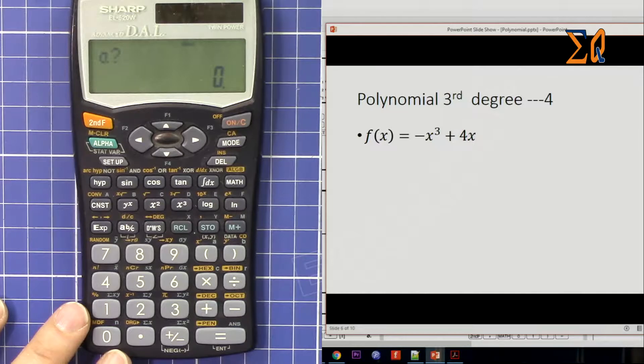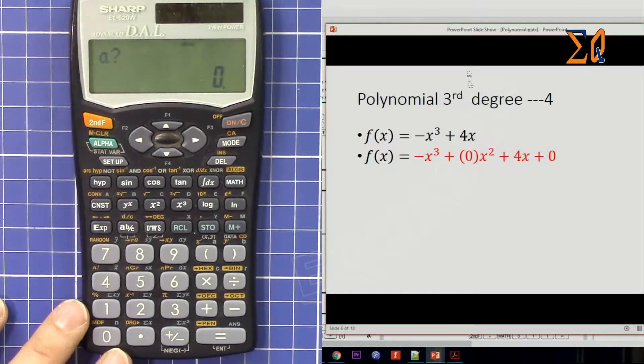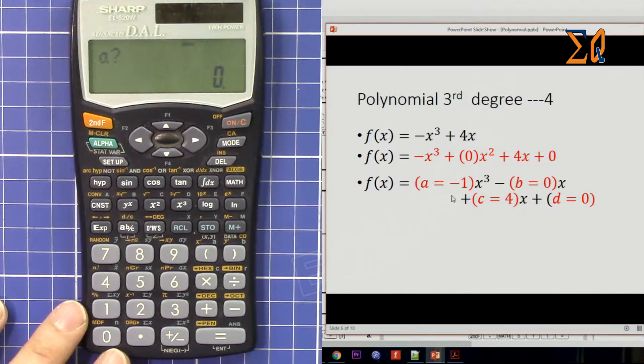So this is the way it is. Because we have x to the power 3 but we don't have x to the power 2, we have to write it as 0 times x². And then we have 4x, and we don't have the last term, also 0. So here we have a is -1, b is 0, c is 4, and d is 0.